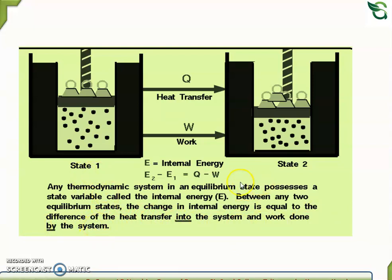There are two states: state 1 and state 2. Internal energy equation is E2 minus E1 equals Q minus W. And E2 minus E1 is equal to delta U.